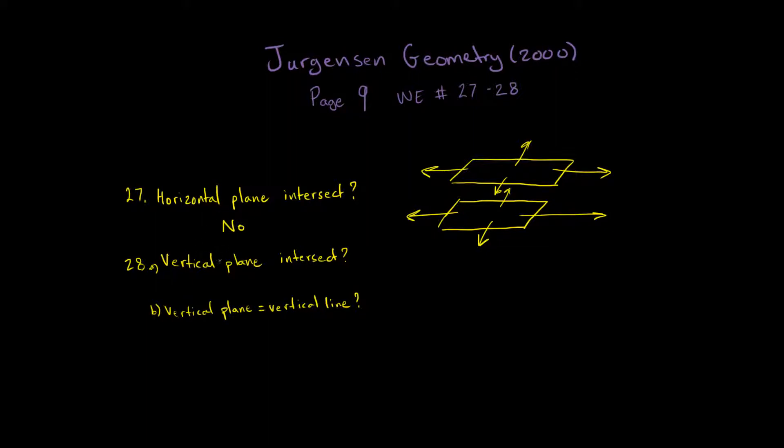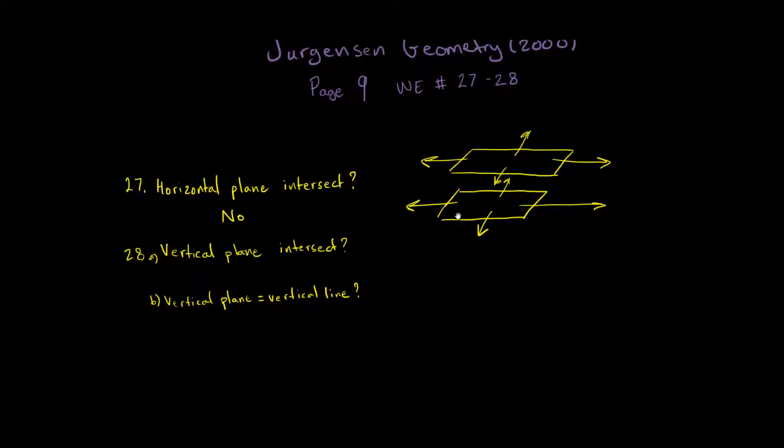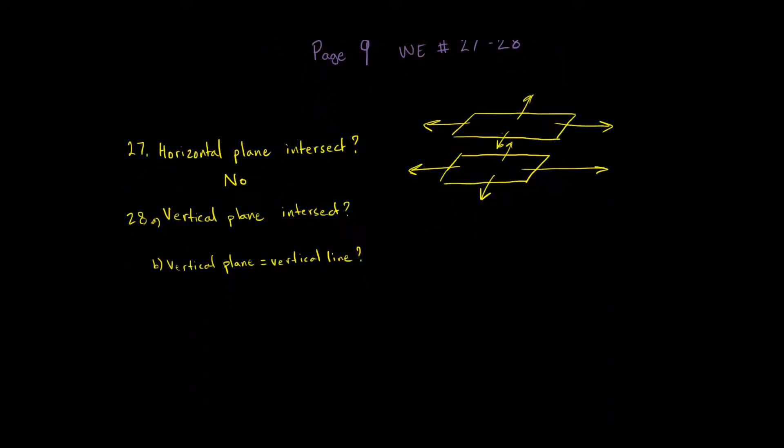Number 28a asks if vertical planes can intersect. So just like a horizontal plane goes left and right and to the sides, a vertical plane goes up and down. So an example of a vertical plane would be something like this.